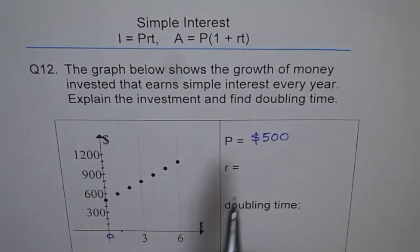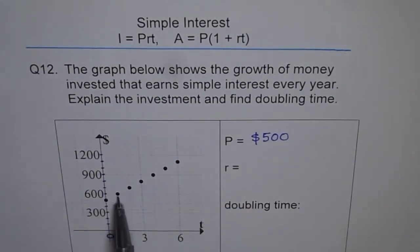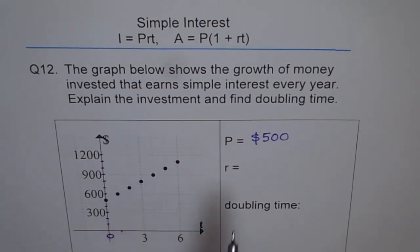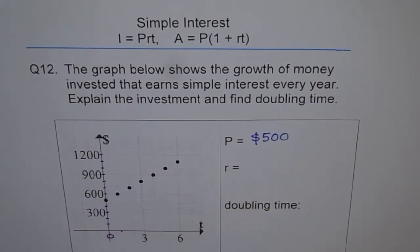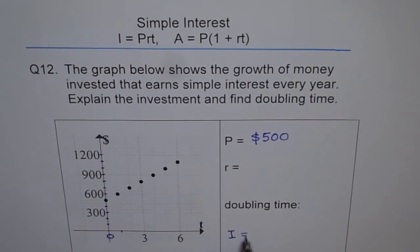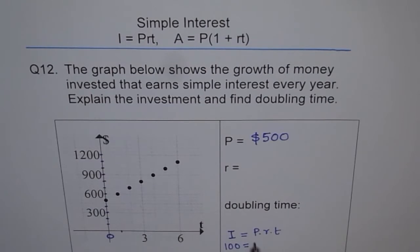The interest earned is given by I = P × R × T, where P is the principal amount ($500), R is the rate of interest, and T is the time. From the graph we can read that the interest per year is $100 and the amount invested is $500.